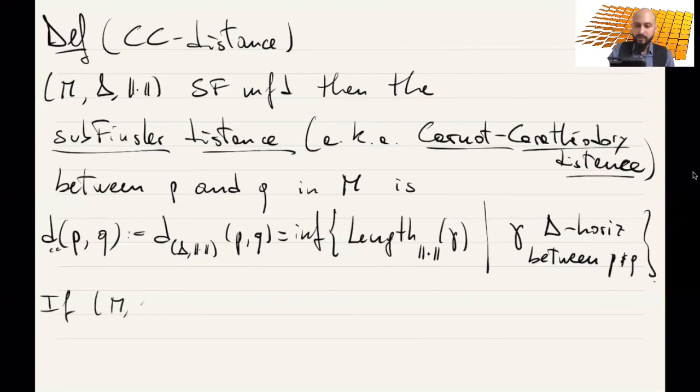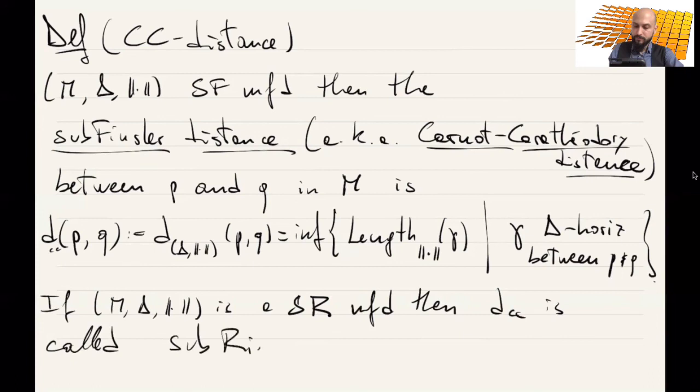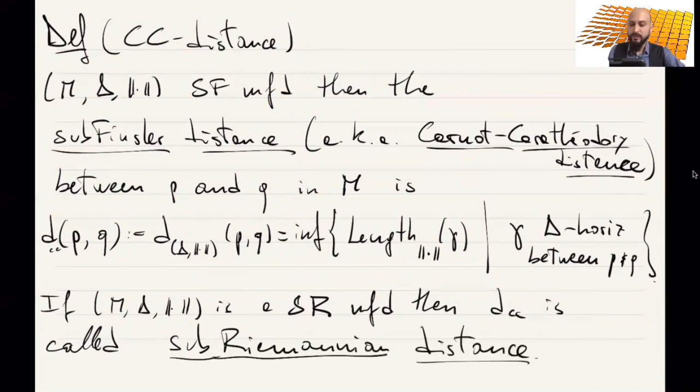This is the infimum of all the length, this is the Finsler length of the curve gamma, but gamma is a delta horizontal curve between p and q. So you have a smaller set of curves. So if delta is a proper sub-bundle, this is a smaller set of curves, and you only measure the length of those curves. If M delta norm is Sub-Riemannian, then the distance DCC is called Sub-Riemannian distance. So M with this distance are the metric spaces that we want to study in this course.